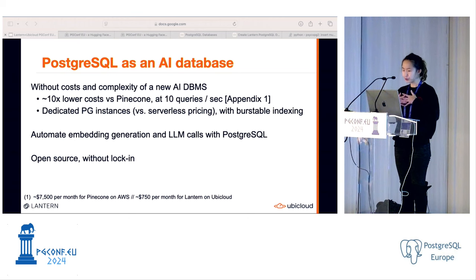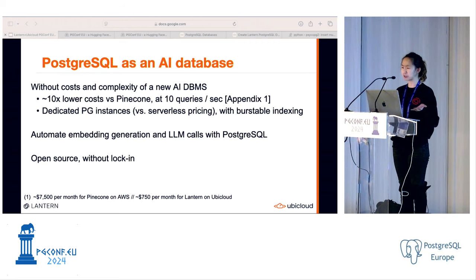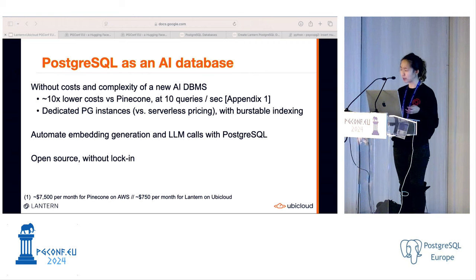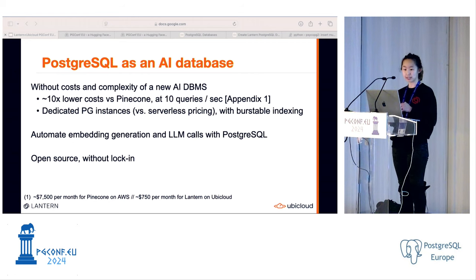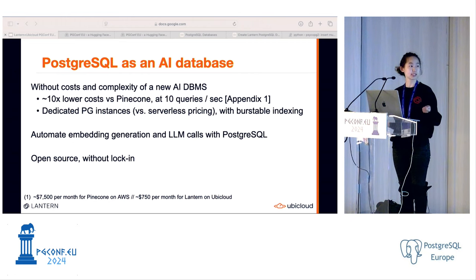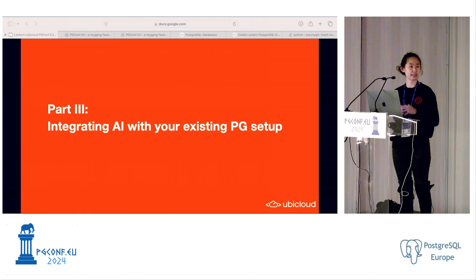In summary, you can build complex applications with only Postgres. You don't need a separate AI-specific database like Pinecone — this costs about ten times less versus Pinecone at ten queries per second. We were able to automatically generate embeddings and LLM outputs using Postgres. All of this was done open source without lock-in: open source embedding models, open source LLM models, Postgres extensions, and UbiCloud. That's the summary of building an LLM chatbot with Postgres. I'll hand it over to Umur.